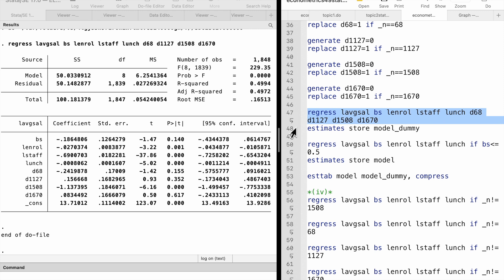The dummy D1508 has a t-statistic of minus 6.16. It is statistically significant at 5% level. It has the largest studentized residual.